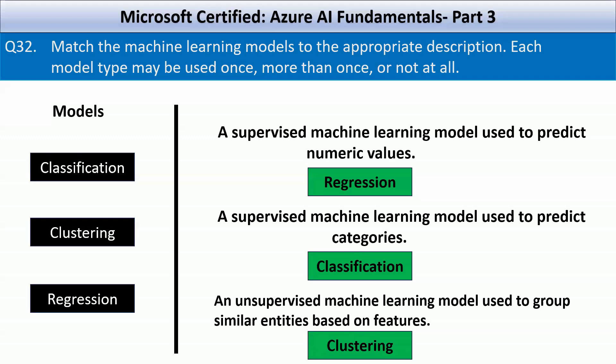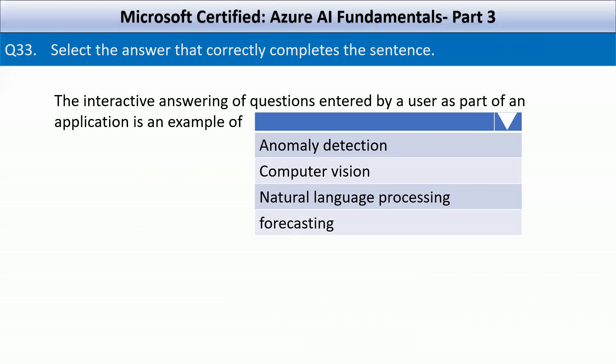Let's look at question number 33: Select the answer that correctly completes the sentence. The interactive answering of questions entered by a user as part of an application is an example of — your options are anomaly detection, computer vision, natural language processing, and forecasting. The correct answer is natural language processing. Interactive answering of user-entered questions involves understanding and generating human language, which is a core function of NLP. It enables applications like chatbots, virtual assistants, and customer support systems to interpret user queries and provide appropriate responses. Anomaly detection identifies unusual patterns in data, computer vision deals with analyzing visual data, and forecasting predicts future trends based on historical data.